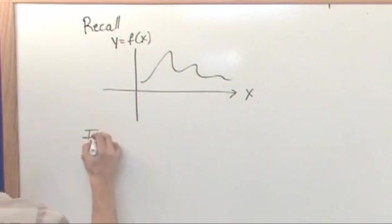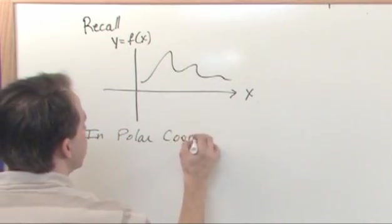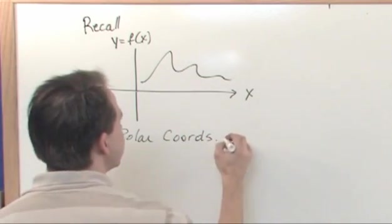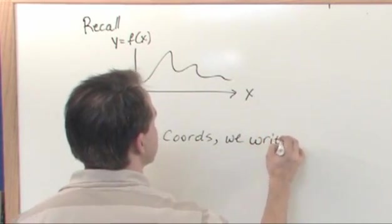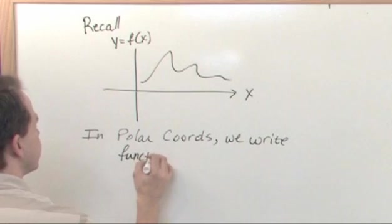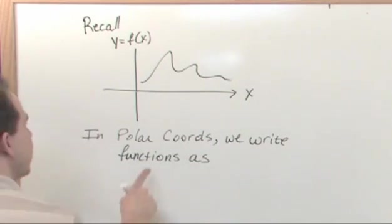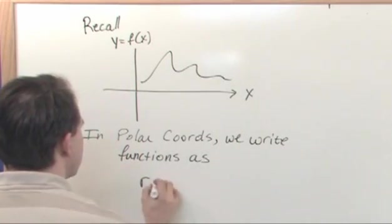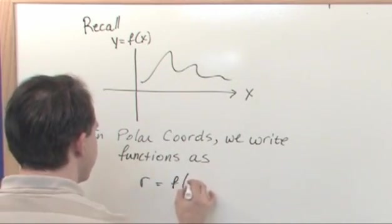So in polar coordinates, we write functions as follows. Instead of f of x, instead of y equals f of x, we say that r is equal to some function of theta.